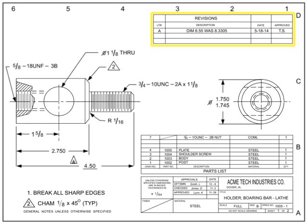The revisions block is a tabulated list of the revisions that have changed the original drawing. It is typically located in the upper right-hand corner of the drawing, although some drafting standards attach it in some way to the title block.